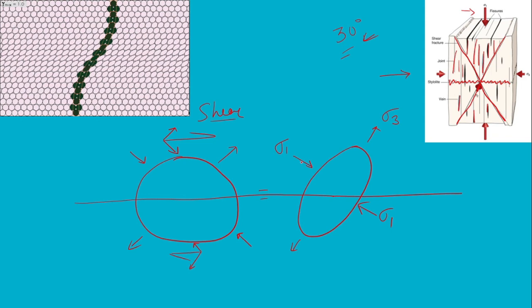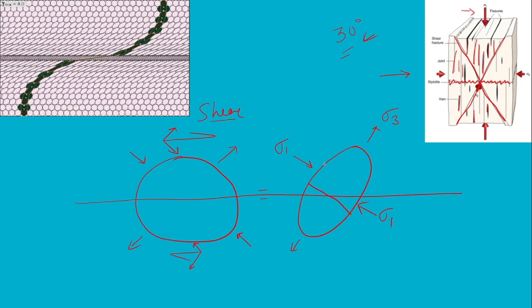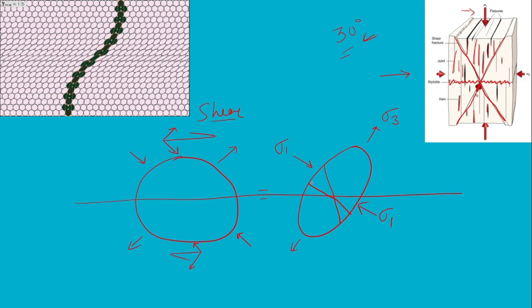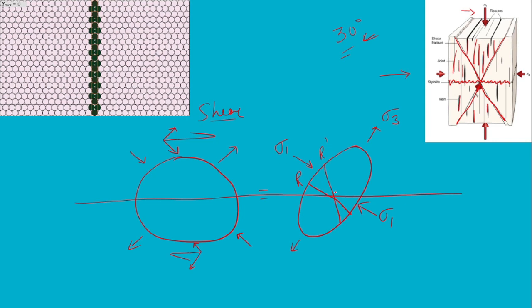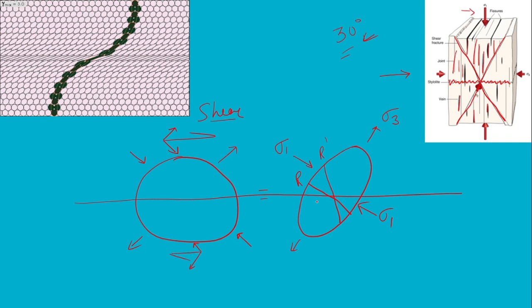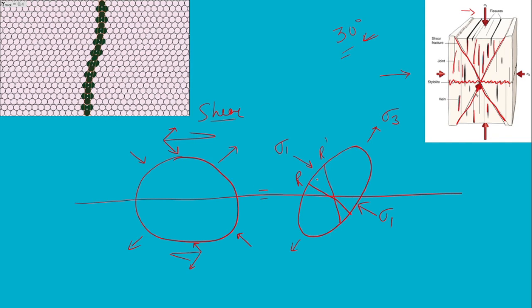So if this is our sigma one, there must have been development of conjugate fractures here as well. So yes, there is a development of conjugate pair of Riedel shears, or shears which we later call as Riedel and conjugate Riedel shears. Now this was a very simple idea behind the formation of Riedel and Riedel shears, which people I don't know why find difficult to understand.